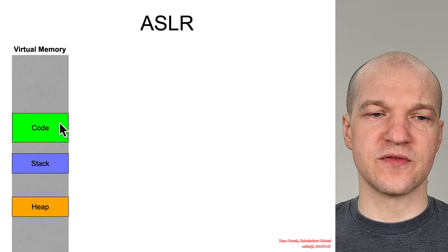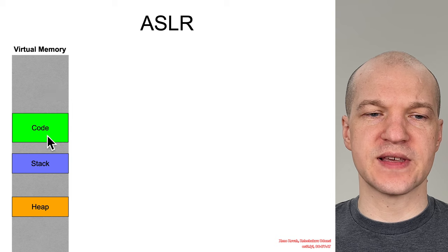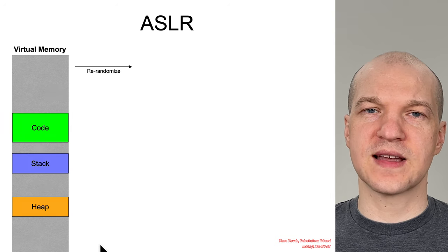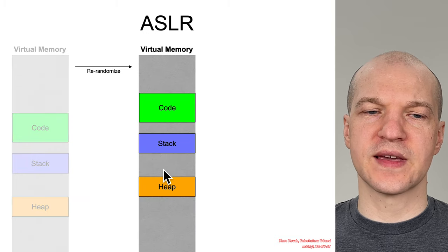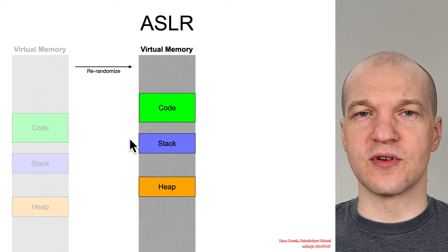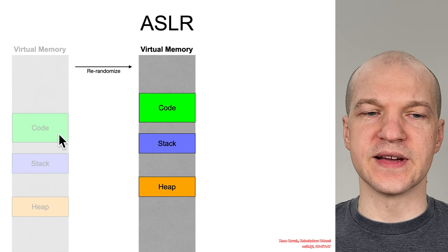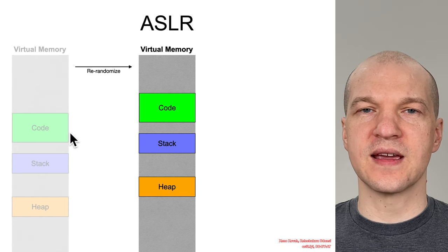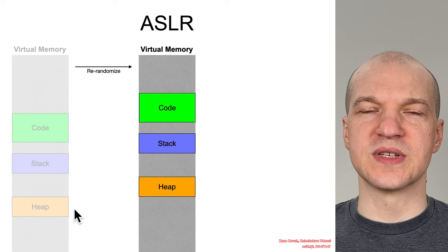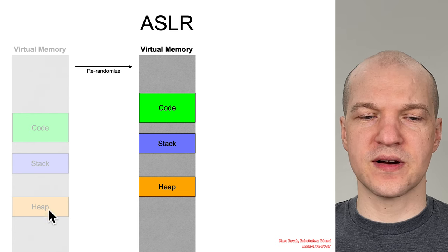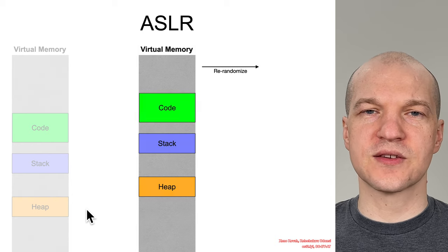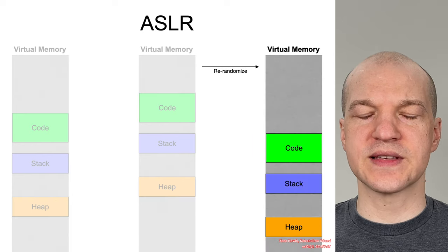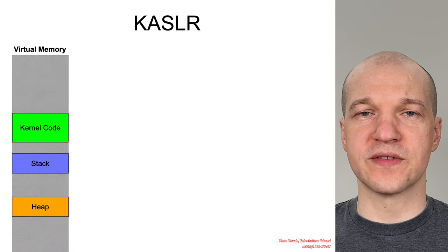If you imagine that virtual memory is set up like this, with some code, stack, and heap in it, the idea is that there's some sort of re-randomization interval at which time things are shifted around in memory. So if an attacker made an exploit that hard-coded an assumption that some code existed here or some data existed there, then their assumptions will be invalid across randomizations, continuously making it more and more difficult for an attacker.